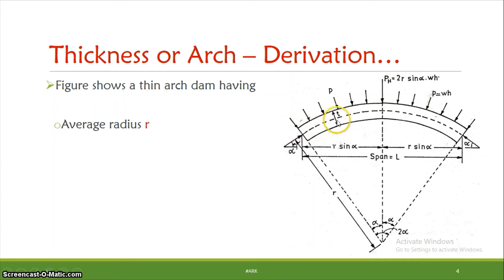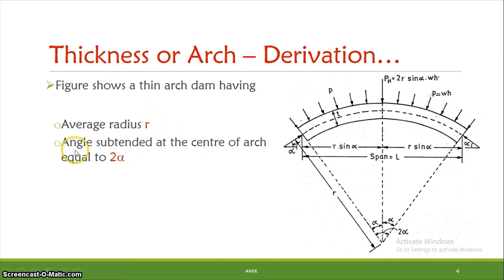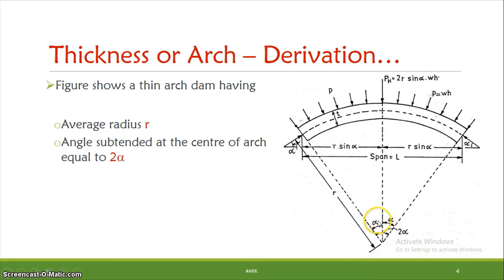We consider the dotted curve in the middle — that is the average radius. The angle subtended at the center of the arch is equal to 2α. On the centerline, we cut the angle equally — that is α on both sides. The thickness is t.